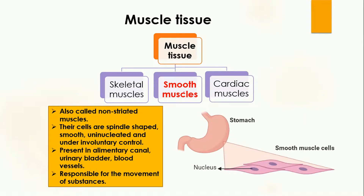The smooth muscles are non-striated muscles, which means they do not contain the parallel lines that were present in the skeletal muscles. The smooth muscle cells are spindle-shaped — you can see their shape here. They are smooth, meaning they do not have any kind of parallel lines, and they are uninucleated, meaning they contain only one nucleus.